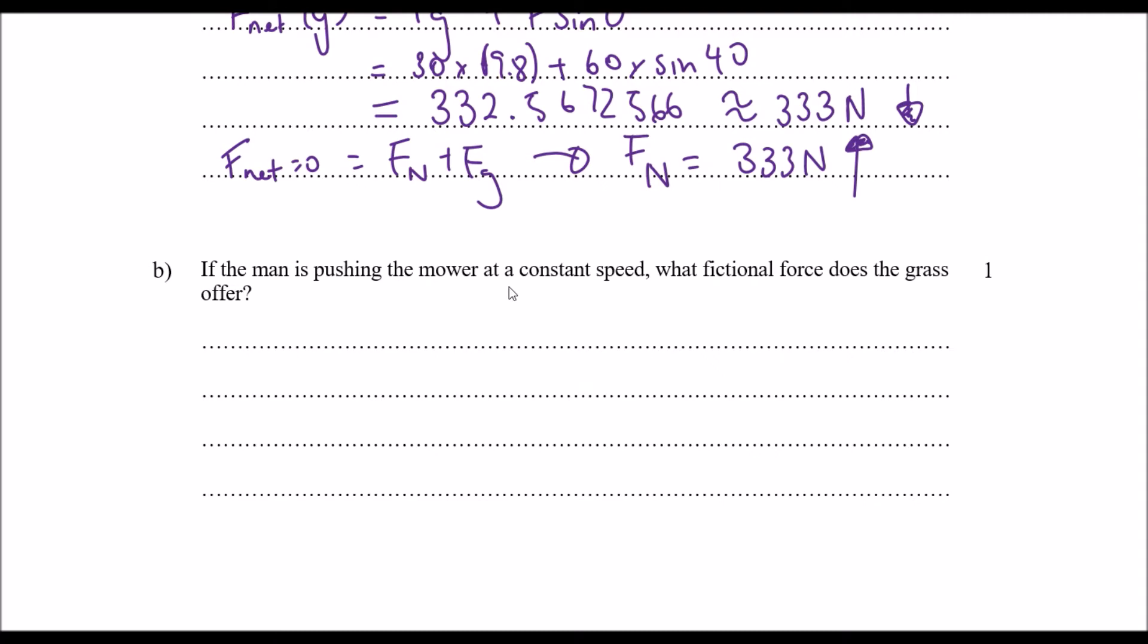Question b: if the man is pushing the lawn mower at a constant speed, what frictional force does the grass offer? Let's have a look. So if we're moving at a constant speed that means the force pushing us forward and the friction force from the grass pushing us back is equal. So the net force is equal. This is an example of a net force of zero but we're still moving, this is what we call a dynamic equilibrium.